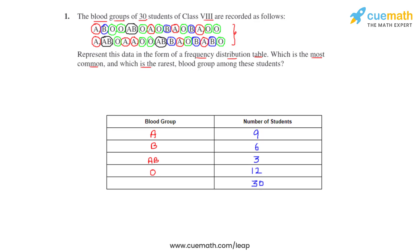From the given table now it will be easy for us to find out which is the rarest blood group and which is the most common blood group. So we can see that blood group AB is the rarest whereas blood group O is the most common blood group.